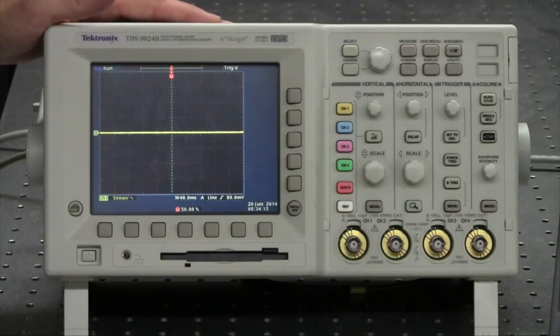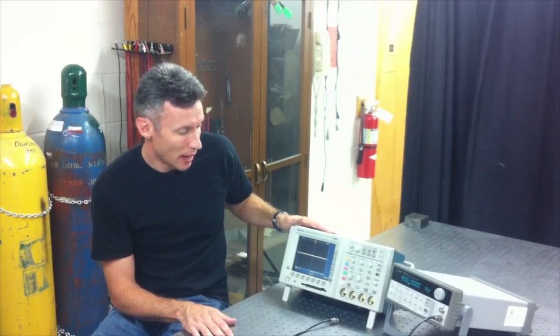The first thing I'm going to do is connect a signal to my oscilloscope. This oscilloscope is a four-channel oscilloscope, meaning it can plot four different signals at the same time.